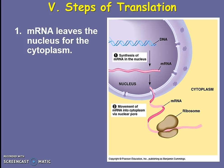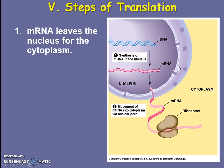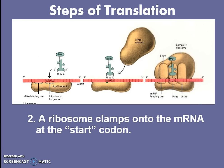Last time we left with our DNA being copied into a message — an mRNA message — a single section of the DNA. Now our DNA can't leave the nucleus, but our middleman, the mRNA, can leave the nucleus. It needs to leave the nucleus into the cytoplasm for our step called translation. So the mRNA will leave the nucleus for the cytoplasm.